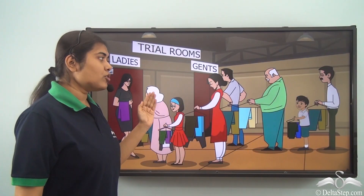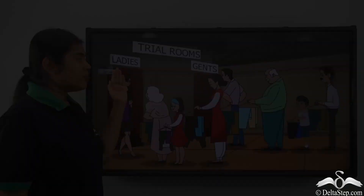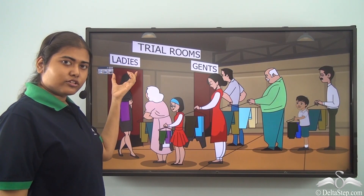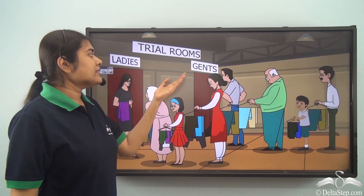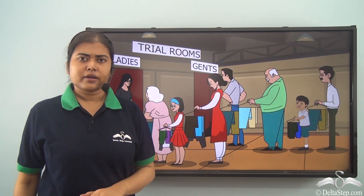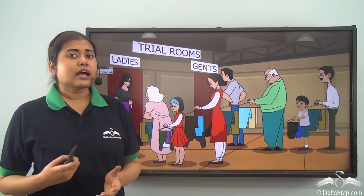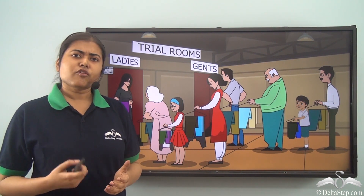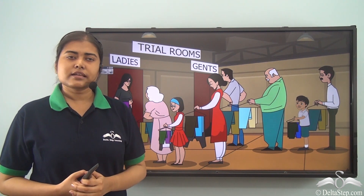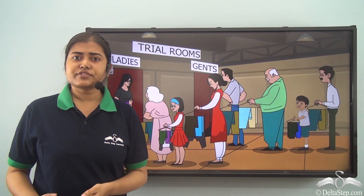He noticed that there were two different trial rooms — one with 'Ladies' written on the top and the other with 'Gents' written on the top. He was very curious about why it was such and what was the importance of all this. Why were they standing in different lines?